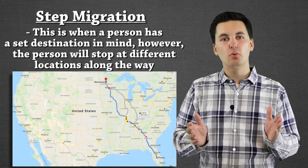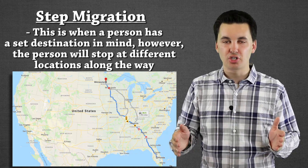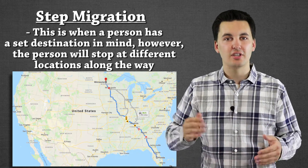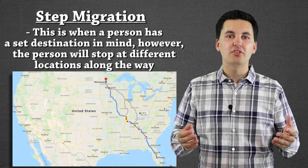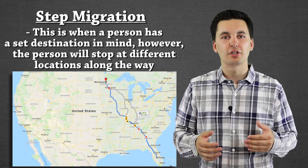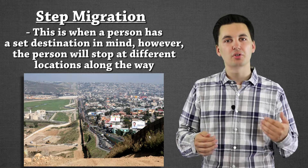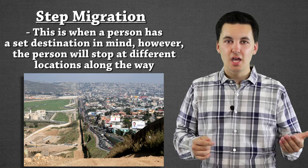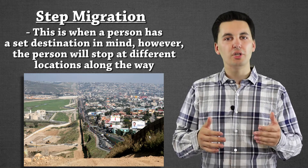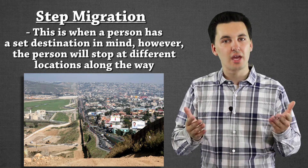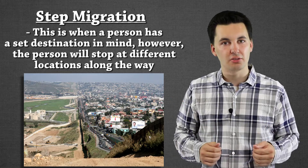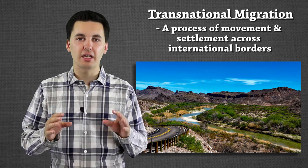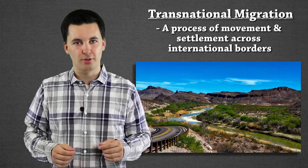There are cases where through step migration people might actually stay in one of the intermediate areas and never make it to that final destination. This also happens when we look at Central America and people coming to the United States — step migration occurs as they move from city to city, and some decide to stay in certain cities or are blocked by obstacles that prevent them from ever making it to the end.